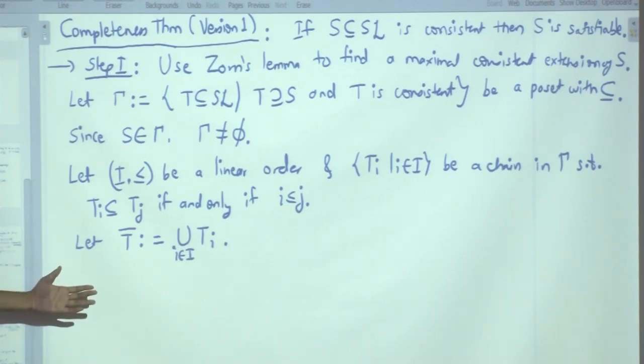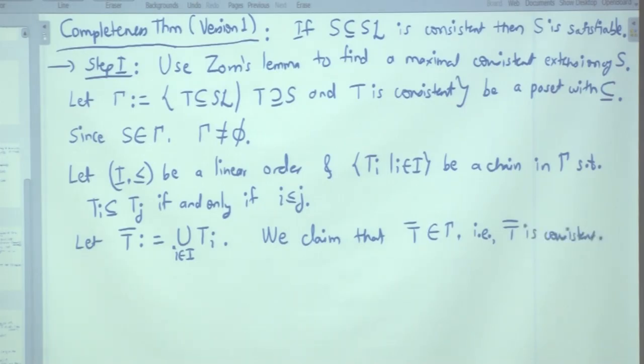Then let T̄ be defined to be union of T_i, i in I. What do we need to claim? That T̄ is - T̄ clearly contains S. We don't need to claim T̄ is maximal. We only need to claim that T̄ is consistent. T̄ belongs to Γ. T̄ clearly contains S. So we only need to check that T̄ is consistent to be in Γ. We claim that T̄ belongs to Γ, i.e. T̄ is consistent.